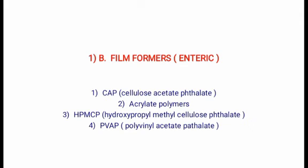The third enteric material is HPMCP, that is Hydroxypropyl Methylcellulose Phthalate. It is derived from HPMC by esterification with phthalic anhydride. It is more stable than CAP and dissolves at a lower pH compared to CAP and acrylate polymers. Its solubility characteristics may result in higher bioavailability of some specific drugs. It is available in various grades such as HP-55 and HP-50. The fourth is PVAP, Polyvinyl Acetate Phthalate, manufactured by esterification of partially hydrolyzed polyvinyl alcohol with phthalic anhydride. It is similar to HPMCP HP-55 in stability and pH-dependent solubility.